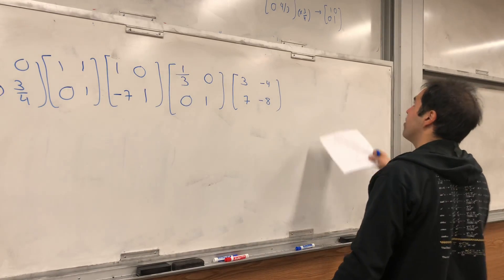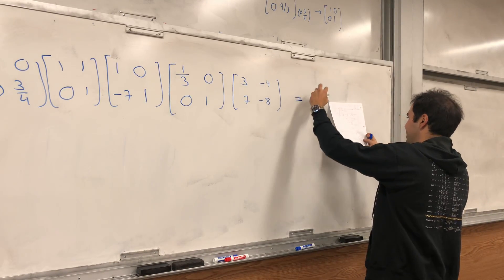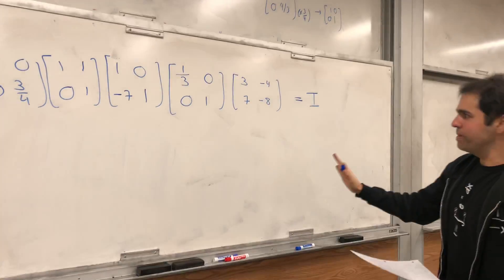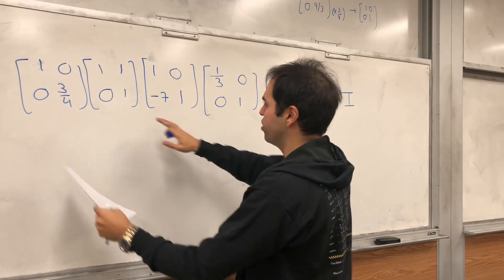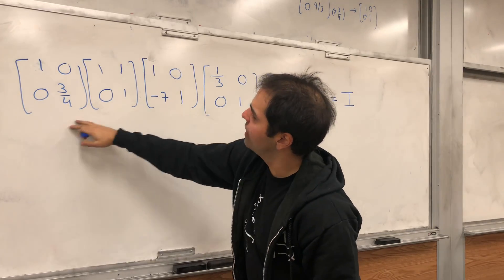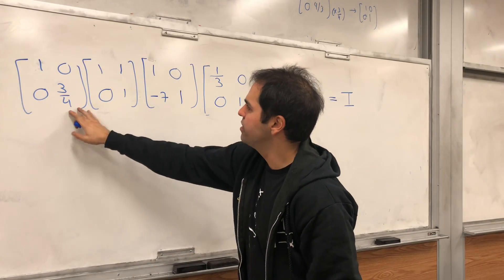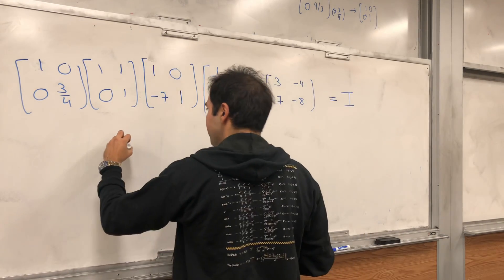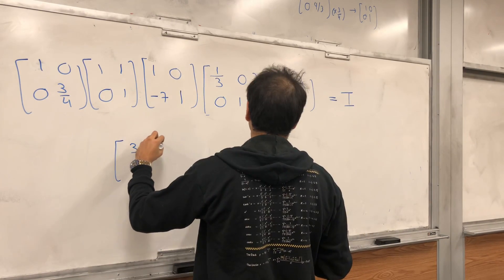So, if you do all that, in the end we get the identity matrix. Which means, if you think about this. So, by the way, when I did matrix inverses, this is what's called the matrix R. Okay. What does that mean? It means that 3 minus 4, 7 minus 8.